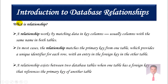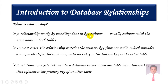First, let me explain what a relationship is. A relationship works by matching data in a key column — usually a column with the same name in both tables. The relationship works by matching key columns, so whenever you are creating a table, you should have a key column so that the relationship can be established using those key columns.